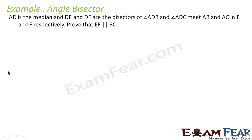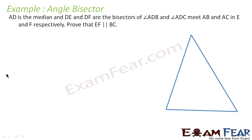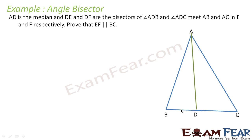Let's take one more example. AD is the median, and DE and DF are bisectors of angle ADB and ADC, meeting AB and AC in E and F respectively. We have to prove that EF is parallel to BC. This is triangle ABC, and let's draw AD, because AD is the median. Since AD is the median, BD will be equal to DC.